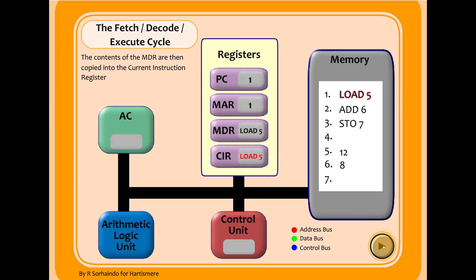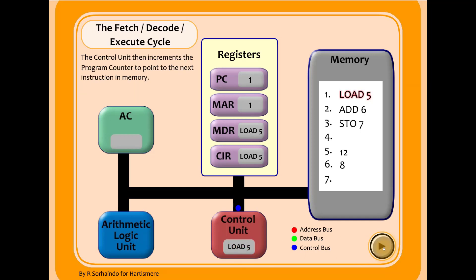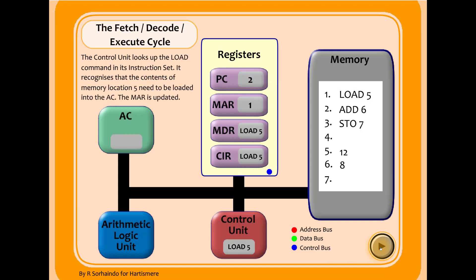Now that the data has been fetched, the next step is to send that instruction to the control unit so it can be decoded — this is the decode part of the fetch-decode-execute cycle. The control unit sees that it needs to load data from address five. The control bus increments the program counter so the next instruction will come from memory address two. Then a control signal updates the memory address register to five, so the CPU knows the next area of memory to access is address five.